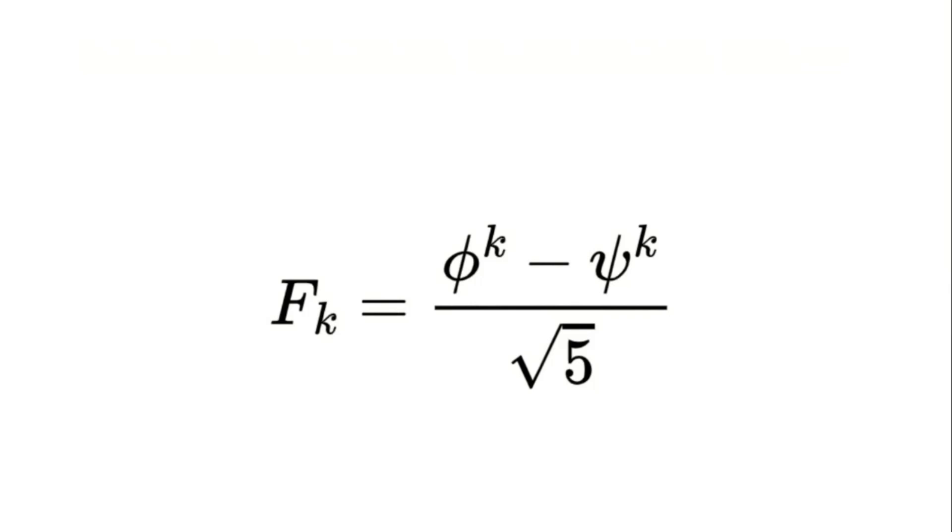You've probably heard of it: 0, 1, 1, 2, 3, 5, 8, 13 and so on, where each number is the sum of the two before it. But did you know there's a general formula that can give you any Fibonacci number without calculating all the previous ones? That's right, and today I'm going to walk you through how to find it, step by step.